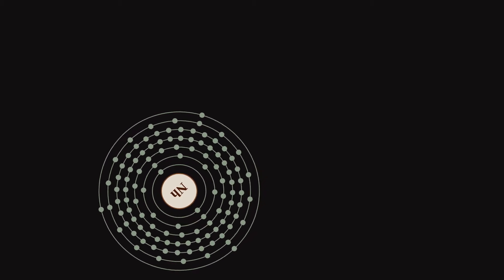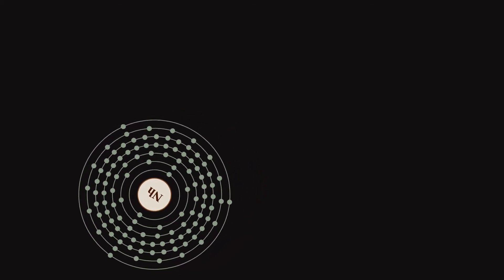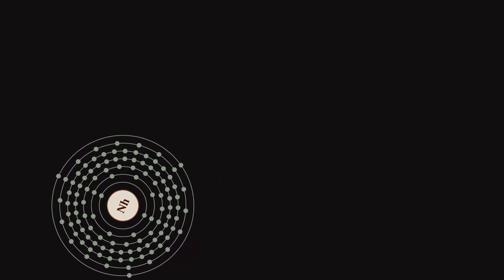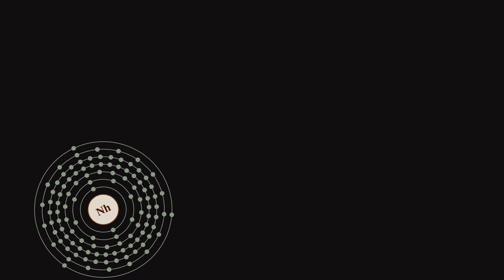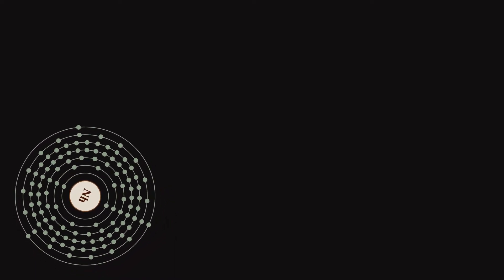Nihonium has been calculated to have similar properties to its homologues boron, aluminum, gallium, indium, and thallium. All but boron are post-transition metals, and Nihonium is expected to be a post-transition metal as well.